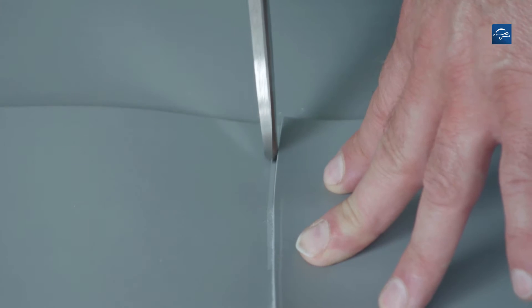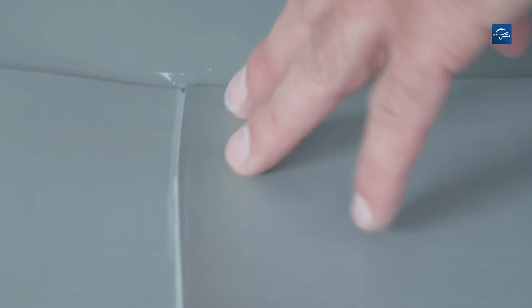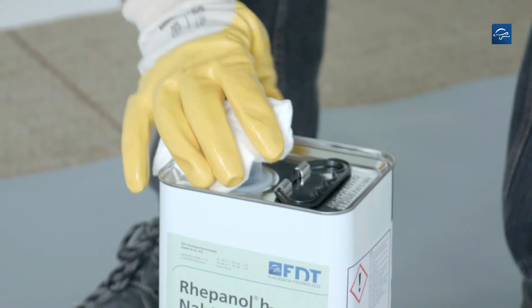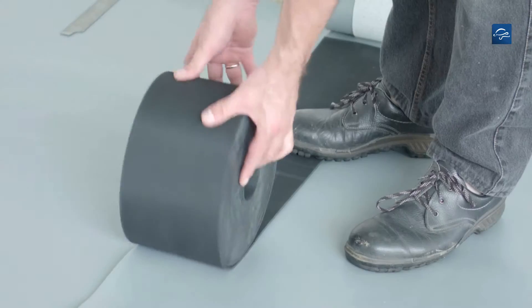The corner of the lower membrane must be cut diagonally. After placing the roofing membranes according to the positioning markings, put some Rhepanol Age Seam Cleaner on an absorbent glove and thoroughly clean the complete seam area.